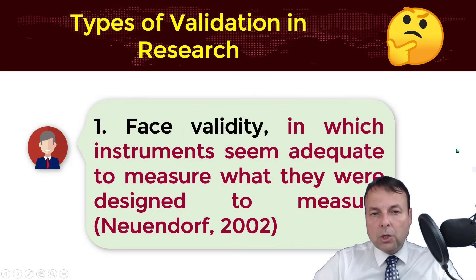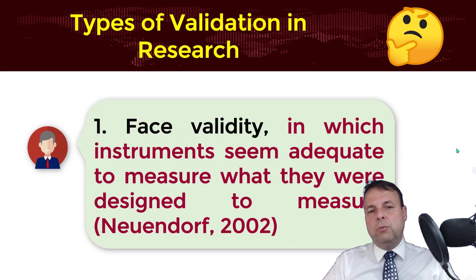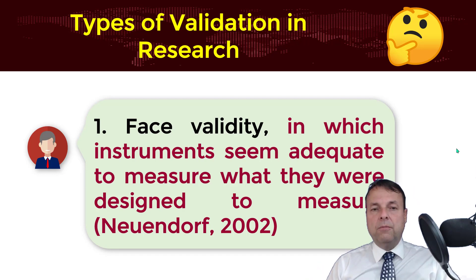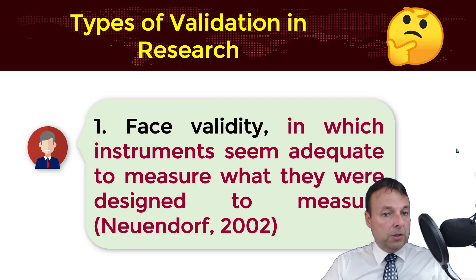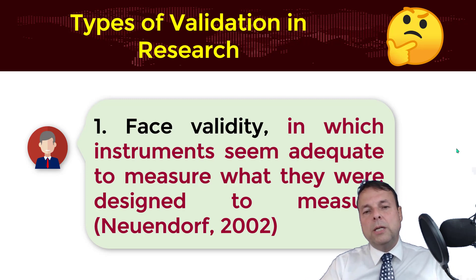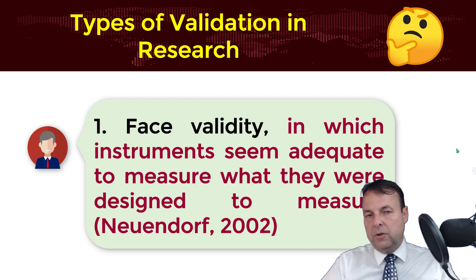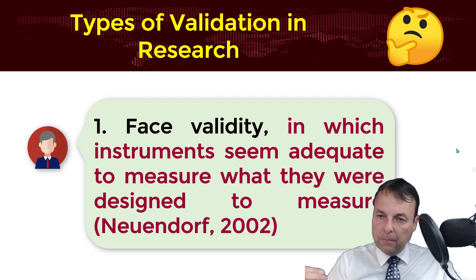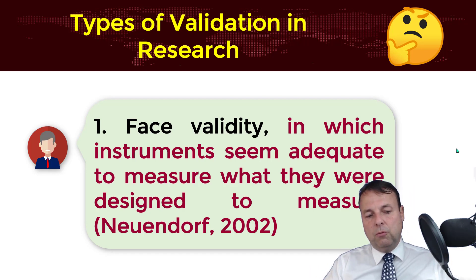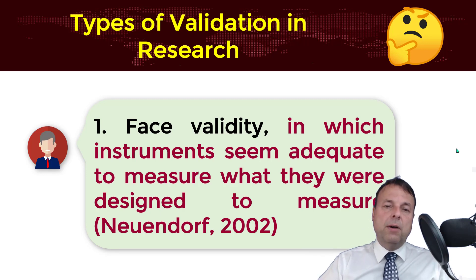What are the types of validation in research? We will discuss some of them. Face validity, for instance, refers to whether an instrument seems adequate to measure what it was designed to measure. To assess face validity, you ask an expert to double-check your research — for instance, your supervisor.